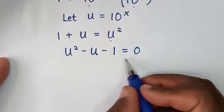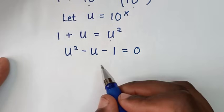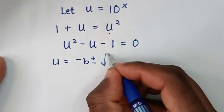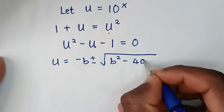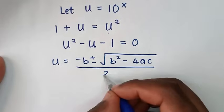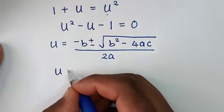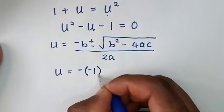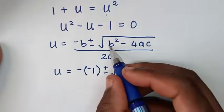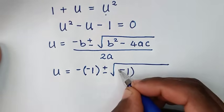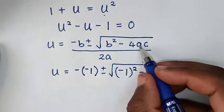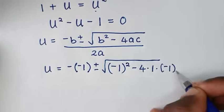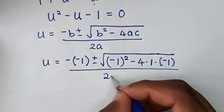To solve this quadratic equation we use the quadratic formula: u equals negative b plus or minus square root of b squared minus 4ac, over 2a. Here b is the coefficient of u which is negative 1, a is the coefficient of u squared which is 1, and c is the constant which is negative 1.